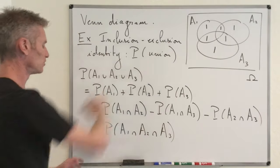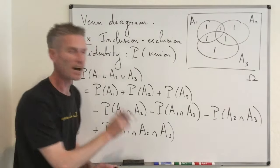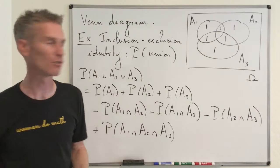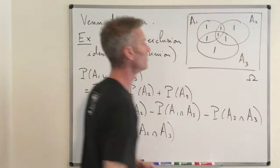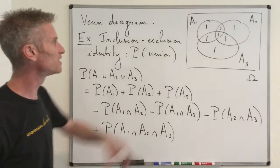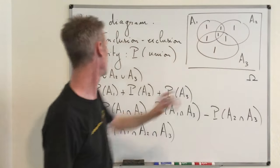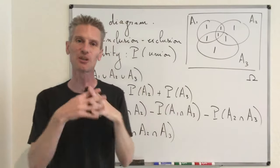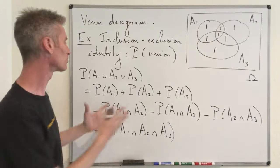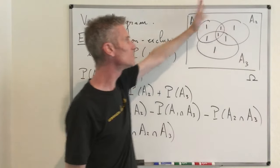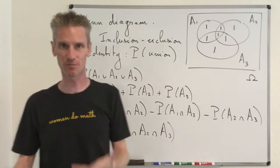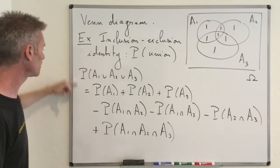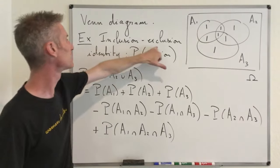So in the last step we add P(A1 ∩ A2 ∩ A3). Going back to the Venn diagram, by adding that we place one tallmark in the subset corresponding to the intersection of all three. Now we count each outcome in the union exactly once. So: P(A1 ∪ A2 ∪ A3) = P(A1) + P(A2) + P(A3) − P(A1 ∩ A2) − P(A1 ∩ A3) − P(A2 ∩ A3) + P(A1 ∩ A2 ∩ A3). This is the inclusion-exclusion identity — not a completely rigorous proof, but it uses only basic properties of probability.